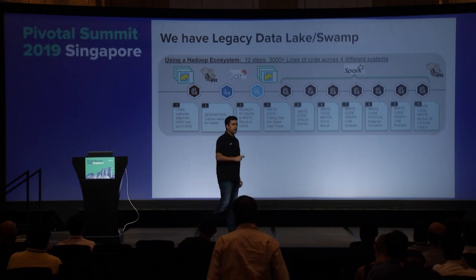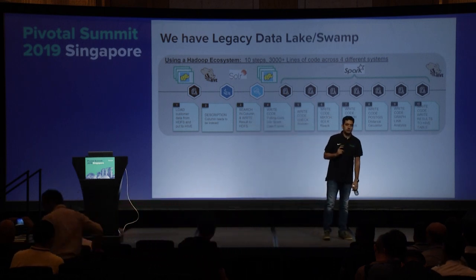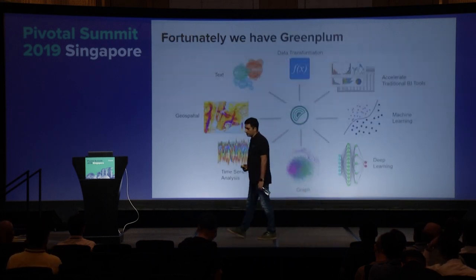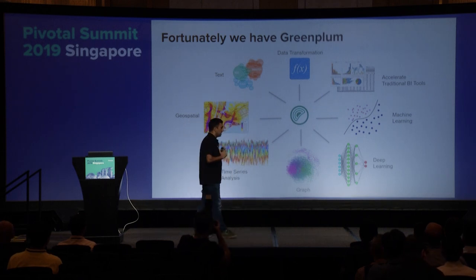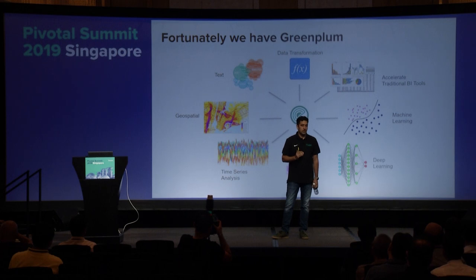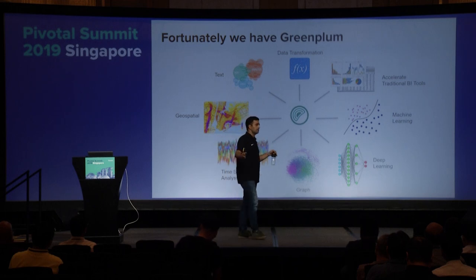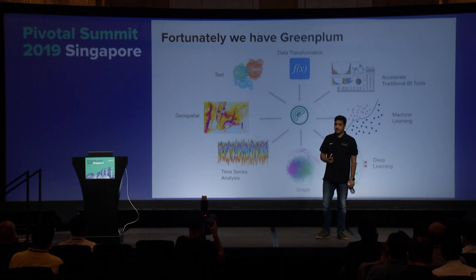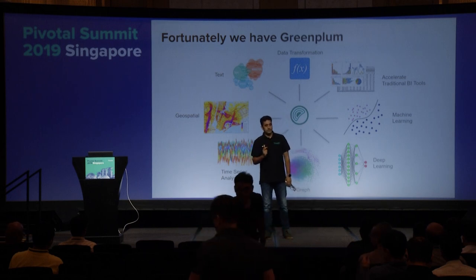As a data scientist, my company has a data lake. If I were to do it on a data lake, I would be doing a lot of steps — like 3,000 lines of code. Lucky for me, my organization also has Greenplum. Greenplum is a massively parallel processing data platform. Imagine thousands of Postgres databases running in parallel together to solve one problem. It's a database which does machine learning, deep learning, graph, time series, and so on.